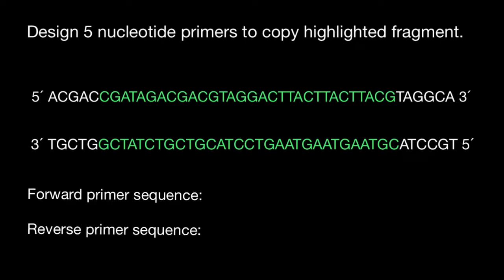Rule number one: in order to design forward primer, we have to start with five prime end. So in our two strands of DNA, we see that bottom strand starts here with three prime. So let me underline it, three prime end. That means that our complementary strand starts with five prime end, and our primer's five prime end have to be here.